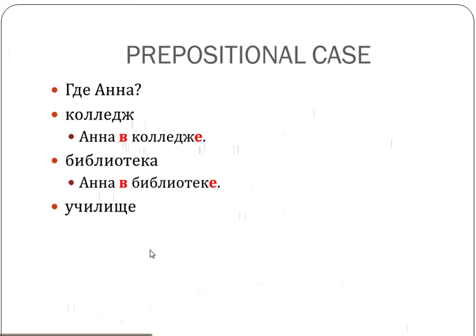Училище — this is like a vocational school, similar to college in your book, though not quite the same, because you can't take general education classes there and transfer to a university or college. So for our school, College of Southern Nevada, please use колледж. But if you have a word ending in Е, and you need an Е ending after в, you drop Е and replace with Е — no real change happens. Анна в училище. So it still follows the rule: most nouns have an Е ending after preposition в, talking about place.